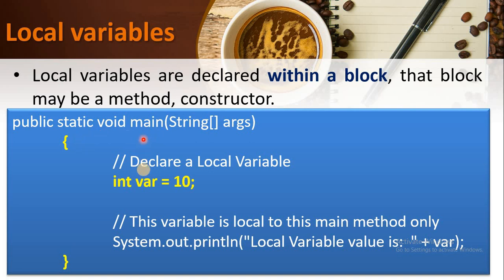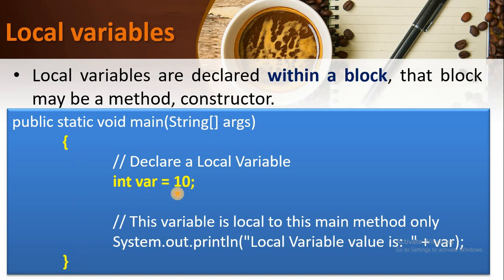Within the main method, I am declaring a variable. This variable is called a local variable because, as per the definition, local variables are declared within a block. A block in Java is created using opening and closing braces. Within this block I am declaring a variable, so it is local to this block. We print the local variable value using system.out.println concatenated with VAR. In this example, we are creating a local variable and accessing it within the same block.